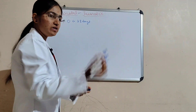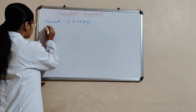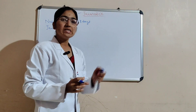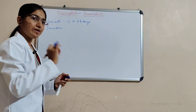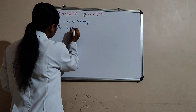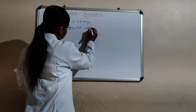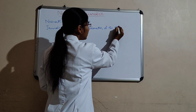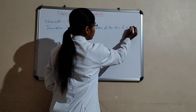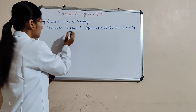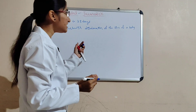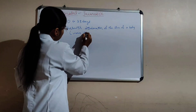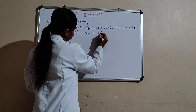And the other word is jaundice. Jaundice is nothing but yellowish discoloration of the skin of a baby. When the bilirubin level in the neonate is more than 5 mg per dL, that is called jaundice.